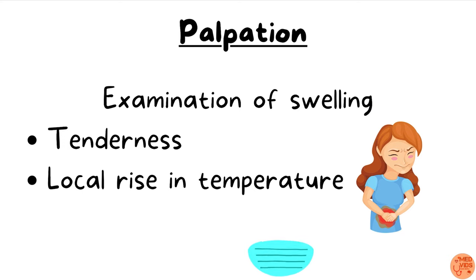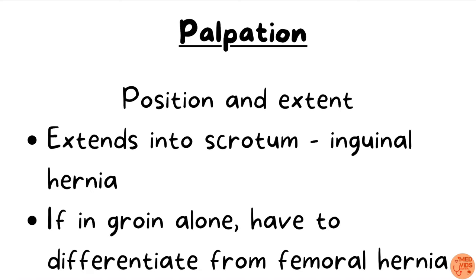Palpation: first note tenderness and local rise in temperature over the swelling. Tenderness is elicited by gently palpating the swelling and observing the patient's facial expression. Compare local temperature on both sides. If a swelling extends from the inguinal canal into the scrotum, it is inguinal hernia. If the swelling is in the groin alone, it can be either inguinal or femoral hernia — a swelling above and medial to the pubic tubercle is inguinal hernia, while one below and lateral to the pubic tubercle is more likely femoral hernia.